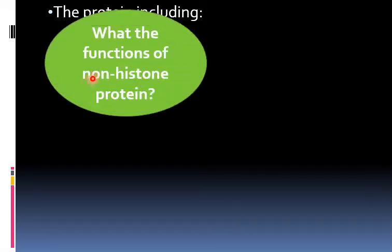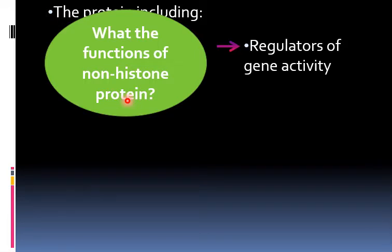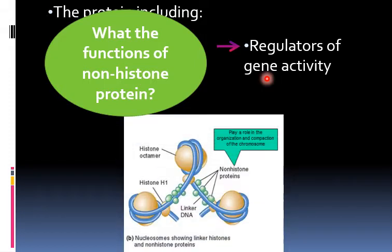What are the functions of the non-histone protein? The non-histone protein acts as regulators of gene activity, such as replication, repair, and transcription. It also plays an important role in the organization and compaction of the chromosome.